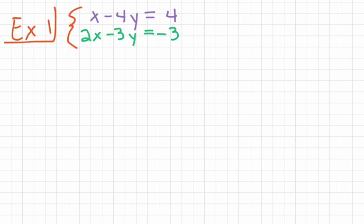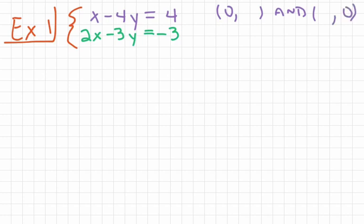We know that the y-intercept is going to be at an ordered pair where we have 0, comma, something — we don't know what that something is yet, but that's what we're trying to find. There's also something called the x-intercept, which is going to be at something, comma, 0. If we find out what those values are for y and x in these ordered pairs, we can just plot those points and connect them with a straight line.